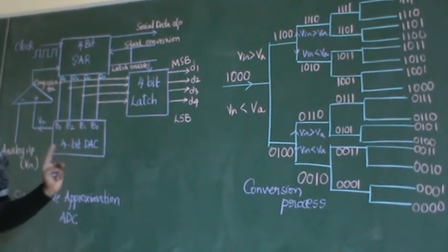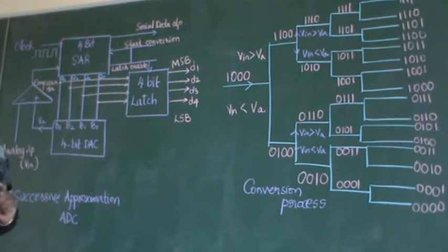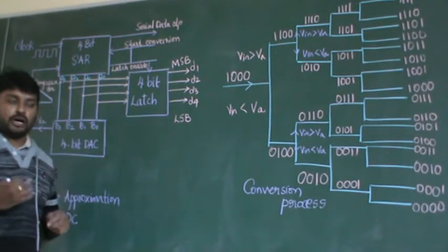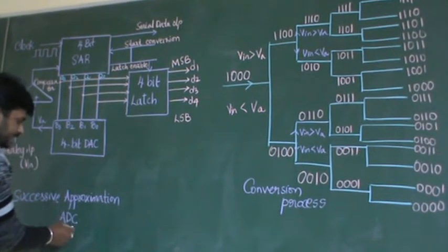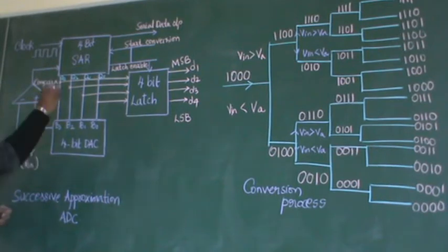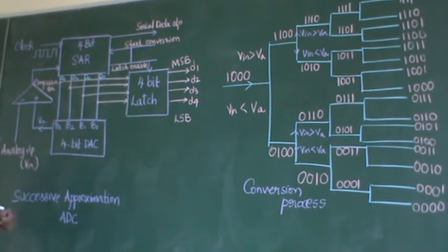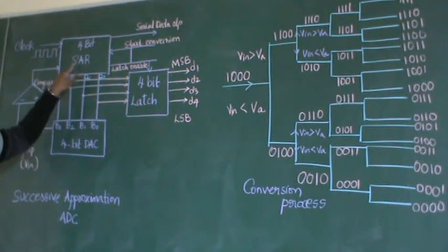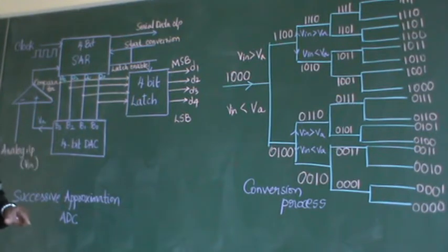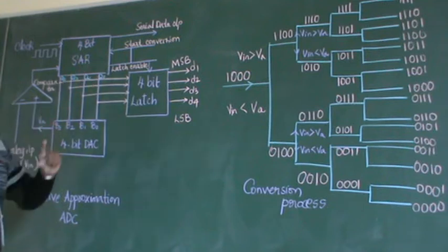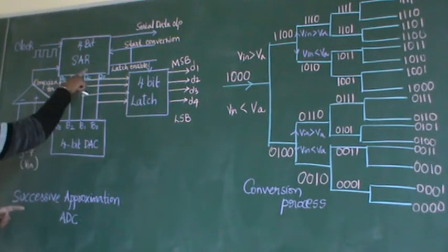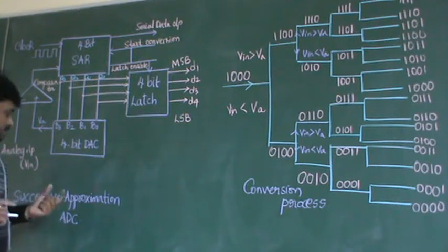Now let me explain the construction. After the explanation of construction, we will try to understand how the principle — how it actually works. This successive approximation ADC consists of one important register, which is the SAR — successive approximation register. It is a 4-bit register, and this is one important block used in this construction.